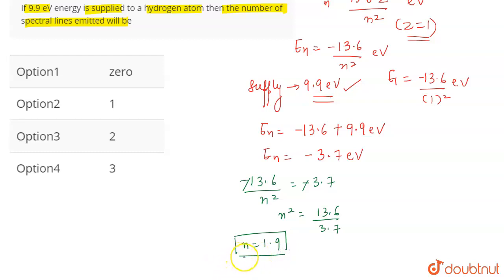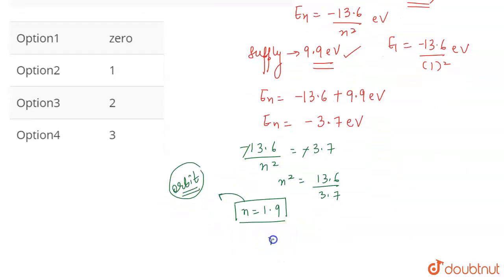Now, if you look at the value of n, that is a decimal value, and n represents the orbit. If we talk about this value of n, this lies between 1 to 2. 1.9 means neither is your electron in the first orbit nor is it in the second orbit.